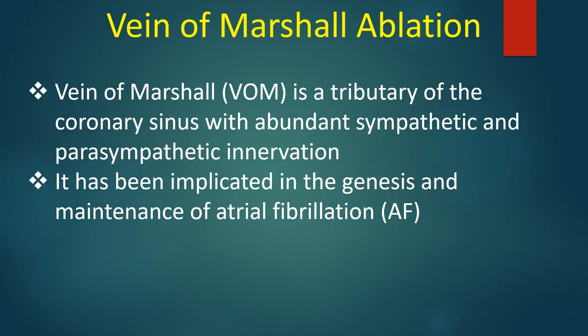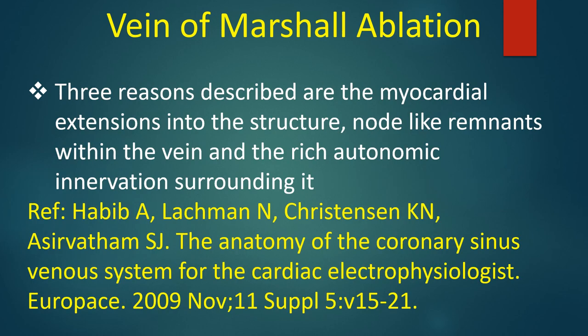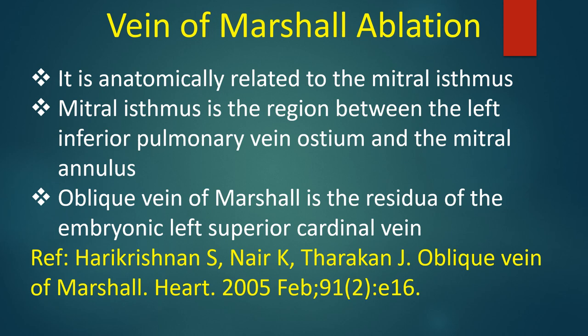Vein of Marshall is a tributary of the coronary sinus with abundant sympathetic and parasympathetic innervation. It has been implicated in the genesis and maintenance of atrial fibrillation. Three reasons described are the myocardial extensions into the structure, node-like remnants within the vein, and the rich autonomic innervation surrounding it. It is anatomically related to the mitral isthmus.